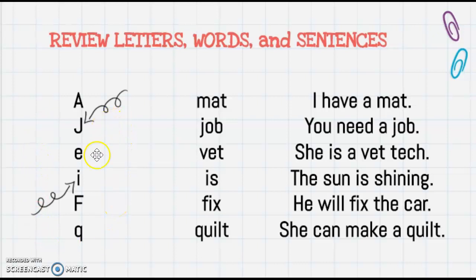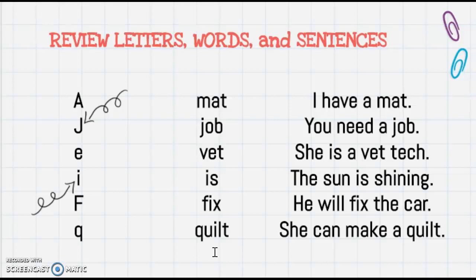You'll notice I have arrows pointing to two different kinds of letters. We have capital letters and we have lowercase letters. What is this a group of? This is a group of words. Very good job. So my letters can come together to form words. And lastly, what is this a group of? This is a group of sentences. So my words come together to form sentences.